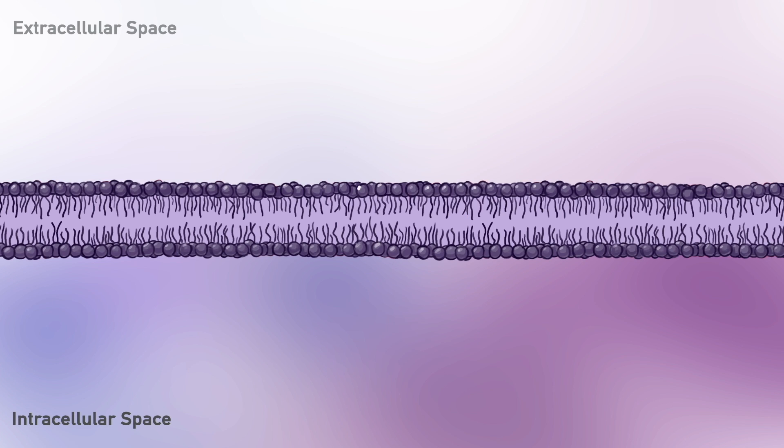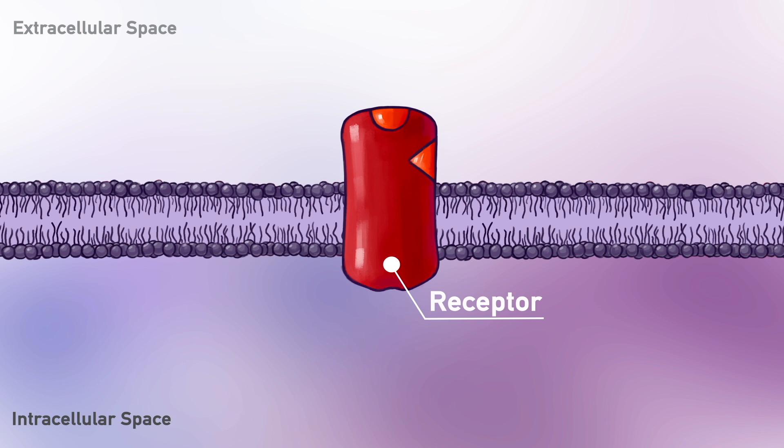A receptor is the cellular molecule whose function is modulated by interaction with the drug and initiates the chain of events leading to the drug's observed effects. The concept of a receptor refers to the principle first introduced by Paul Ehrlich: substances do not act if not bound. The substance that binds to its receptor in general is called a ligand.